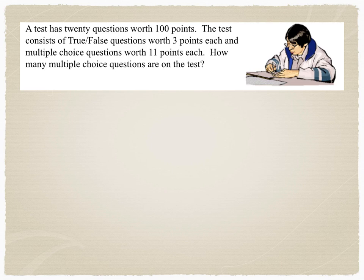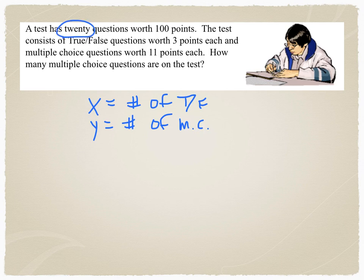A test has 20 questions worth 100 points. The test consists of true-false questions worth 3 points each, and multiple-choice questions worth 11 points each. How many multiple-choice questions are on the test? Again, couldn't I just take the test and count them? No, it's word problem land. We have to do what they tell us to do. So we're going to start by defining our variables. X for me is going to represent the number of true-false questions. Y is going to represent the number of multiple-choice questions. I have a total of 20 questions. There's your first relationship. And you often find that one of the relationships is a number-of-items relationship. And that the other one is a value of the item.